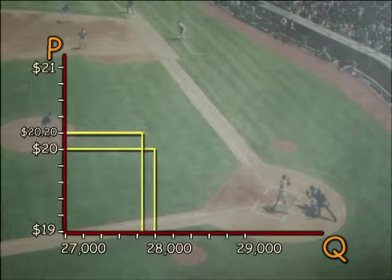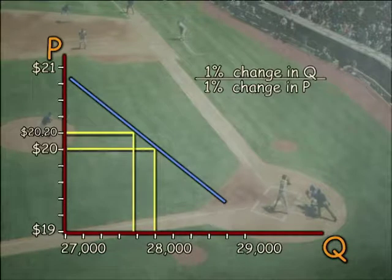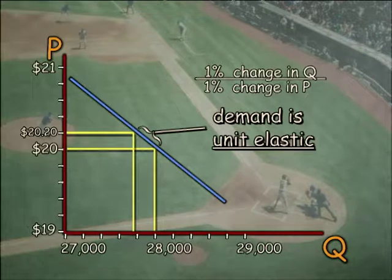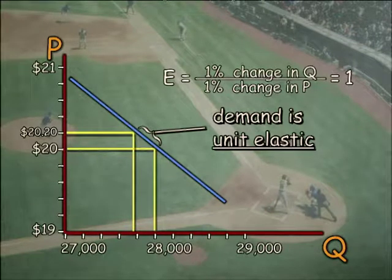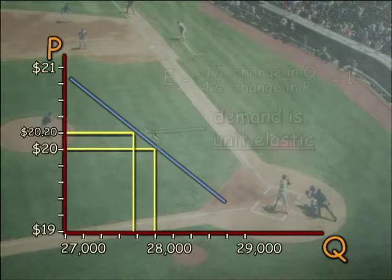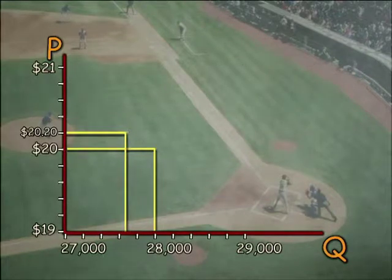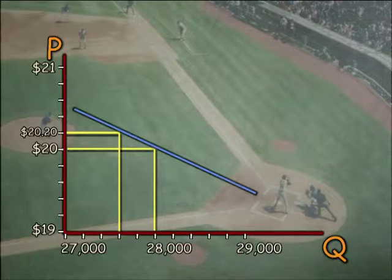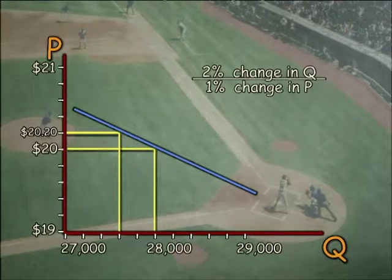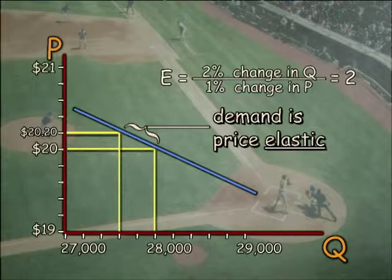If a 1 percent price rise were to cause exactly a 1 percent decrease in ticket sales, we'd call the demand for tickets unit elastic — sometimes referred to as an elasticity of one. And if a 1 percent price increase were to cause more than a 1 percent dip in quantity demanded, we'd have an elasticity coefficient of more than one, and demand would be price elastic.